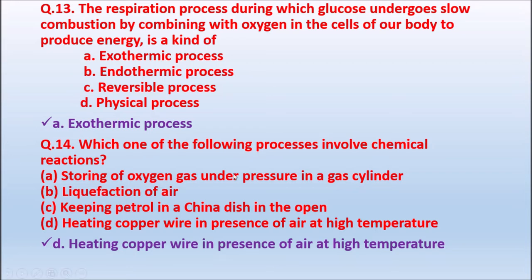Question 14: Which of the following processes involves a chemical reaction? Option A: Storing oxygen gas under pressure in a gas cylinder. Option D: Heating copper wire in the presence of air at high temperature. The correct process involving a chemical reaction is Option D — heating copper wire in the presence of air at high temperature.